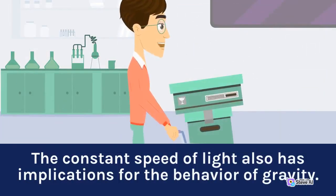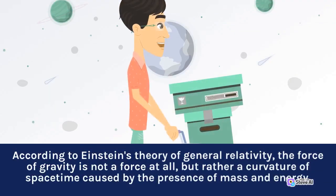The constant speed of light also has implications for the behavior of gravity. According to Einstein's theory of general relativity, the force of gravity is not a force at all, but rather a curvature of spacetime caused by the presence of mass and energy.